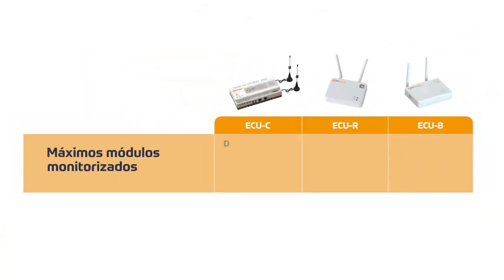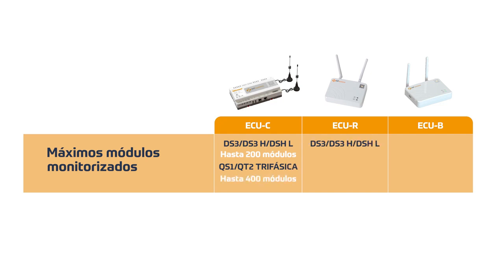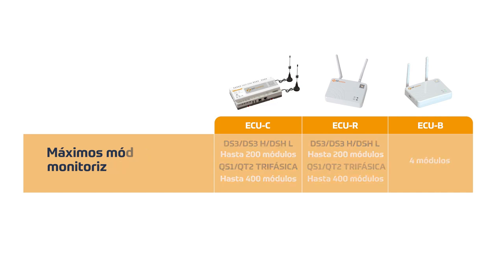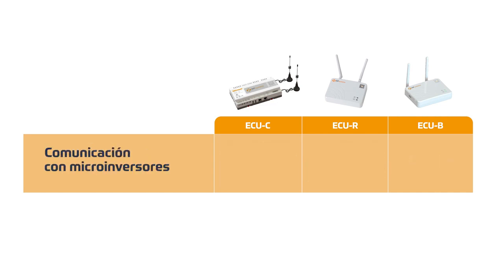Maximum modules monitored: EQC DS3s up to 200 modules; QT2s three-phase up to 400 modules. EQR DS3s up to 200 modules; QT2s three-phase up to 400 modules. EQB: four modules, independent of the microinverter. Communication with microinverters is available as EQC, EQR, and EQB.